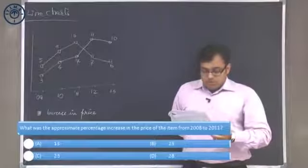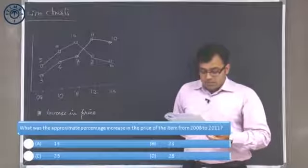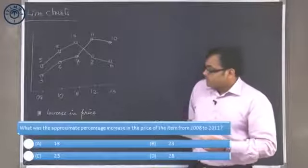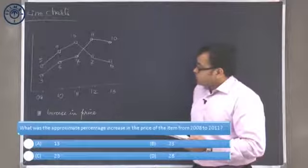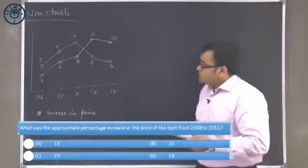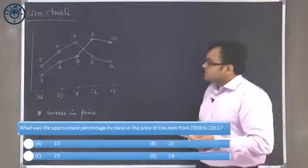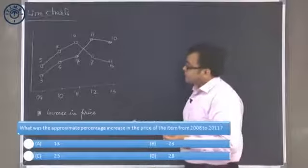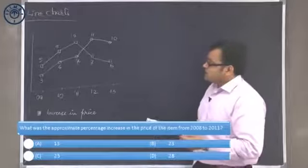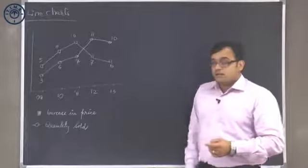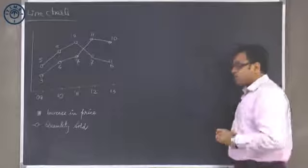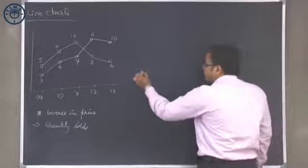What was the approximate percentage increase in the price of an item from 2008 to 2011? If you look at the prices from 2008 to 2011, first year it is increasing by 5 percent, second year it is increasing by 8 percent, third year it is increasing by 10 percent. So if I was to combine 5, 8 and 10, there can be two ways of going about this.